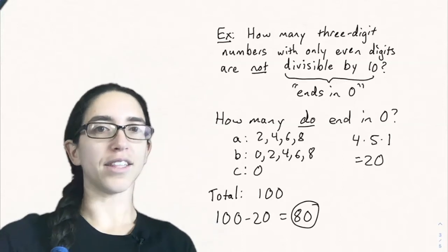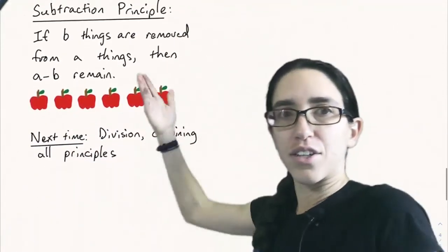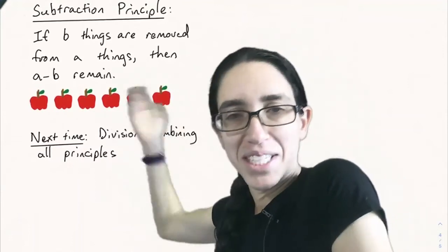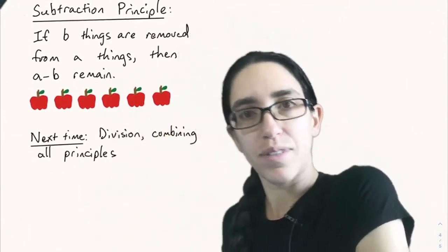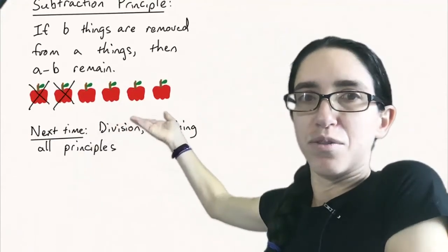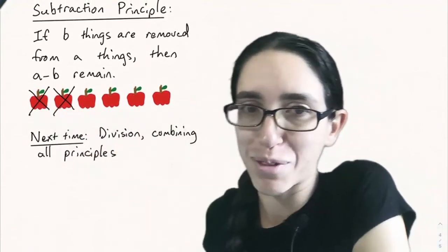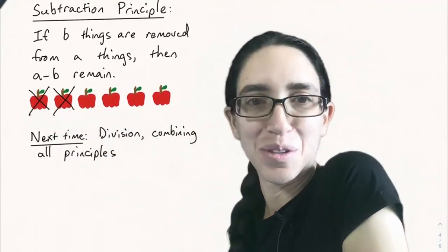So let's state the general subtraction principle now. If B things are removed from A things, then A minus B remain. Again, a simple sounding principle, but very powerful when you use it in difficult problems. Here's just an illustration of this. If we have six apples and we take away two apples, we are left with four apples. So there's six minus two equals four.